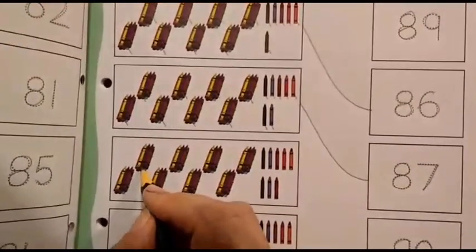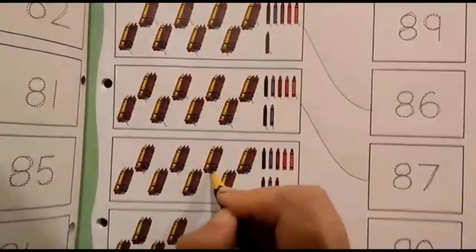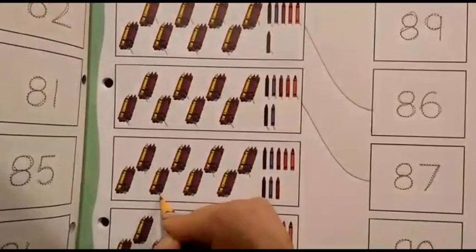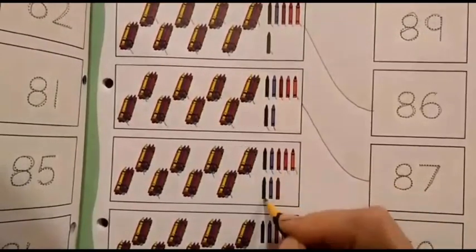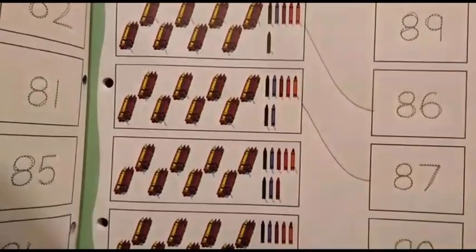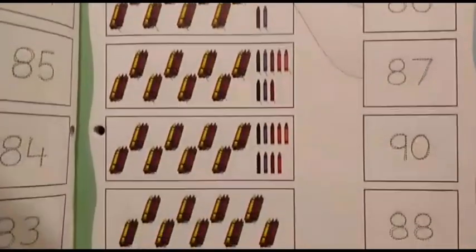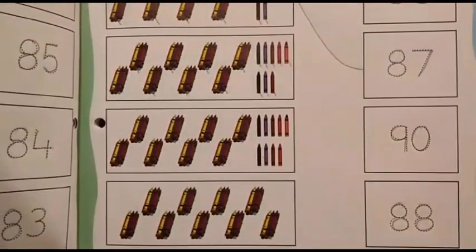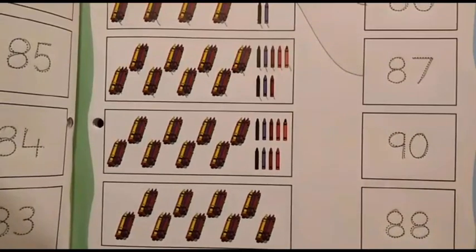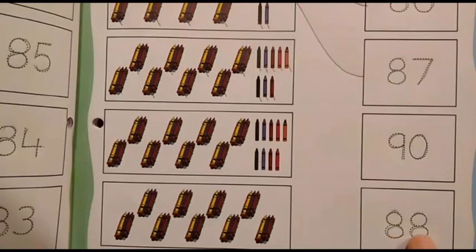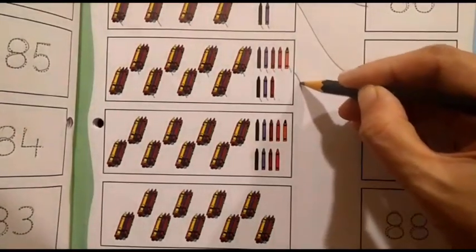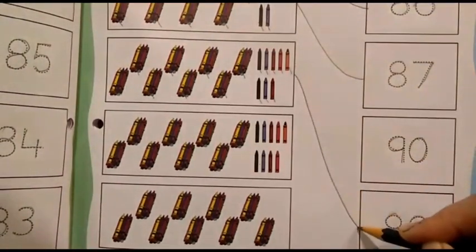Again, we will begin. 10, 20, 30, 40, 50, 60, 70, 80, 81, 82, 83, 84, 85, 86, 87, 88. Where is number 88? Can you see it anywhere? Which two numbers come in 88? 8, 8, 88. So, where is number 88? Here. This is 8, this is 8, 88, 88. So, we are going to match 88 crayons with number 88.